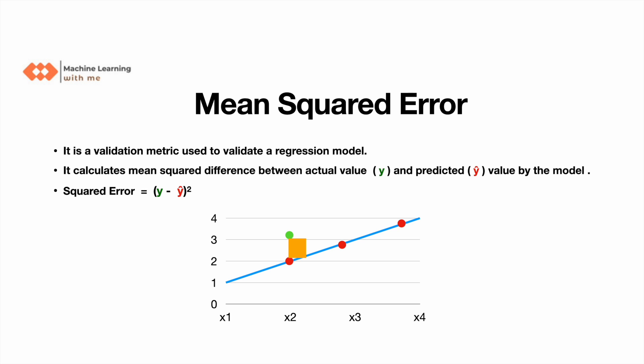The squared error is calculated by taking the difference between the actual value and the predicted value. Here the actual values are the green dots and the predicted values are the red dots on the regression line. We then square the difference, so actual values may lie above or below the regression line. To avoid negative values, we square it — whereas in the previous video for MAE we used the absolute function.